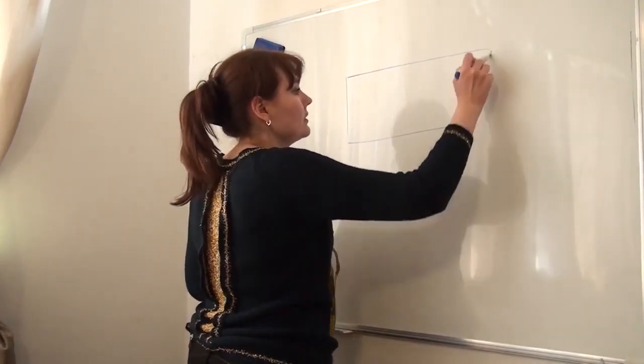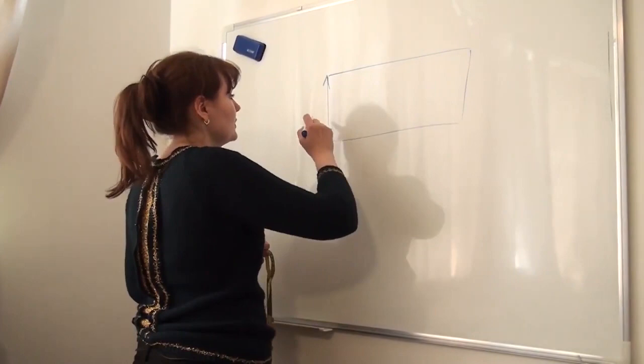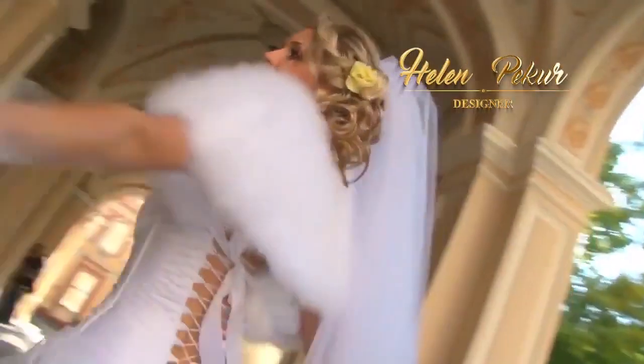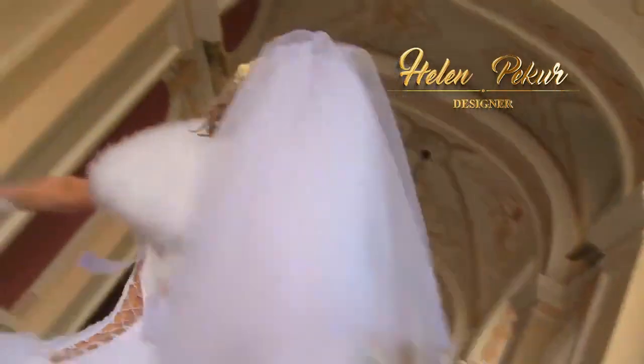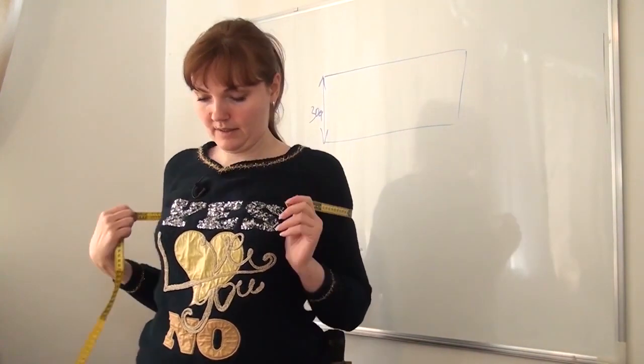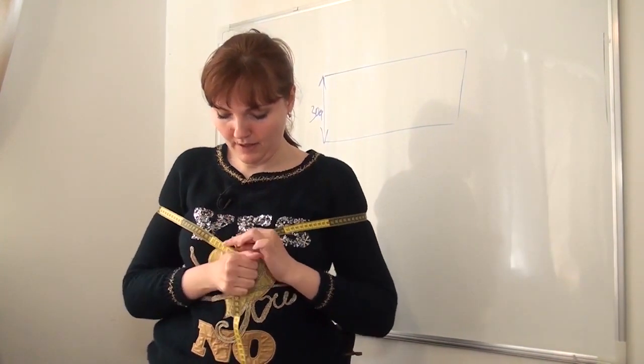Step 1. I am using a rectangle shape. This side is 30 cm. This is the length of the cape on the back. Now I measure like this. This is the width of the cape, 120 cm.